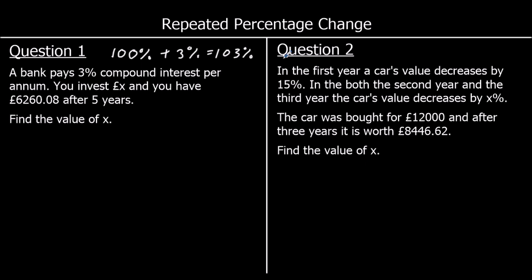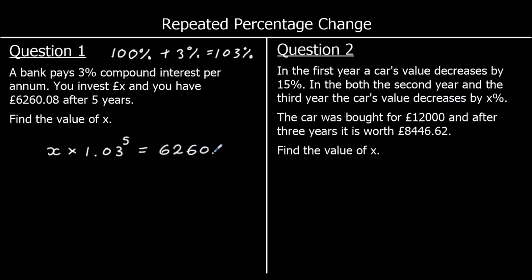You invest X — some amount of money — and you have £6,260.08 after 5 years. Find the value of X. So if we have our original amount, which is X, and we multiply it by our multiplier — 103% written as a decimal, so 1.03 — and we need to do that for 5 years, so we put it to the power of 5. Our original amount multiplied by 1.03 to the power of 5 gives us our final amount of money: £6,260.08.